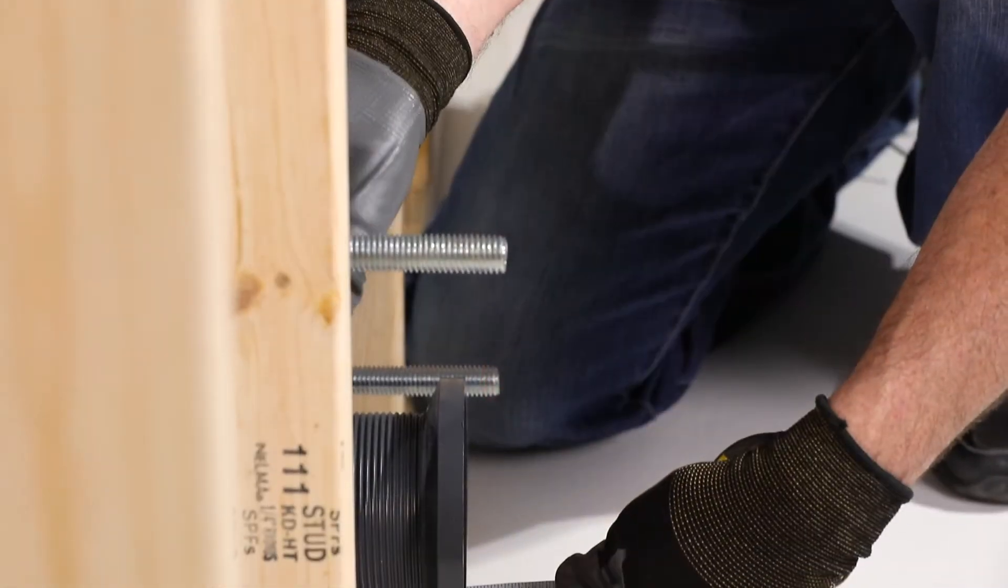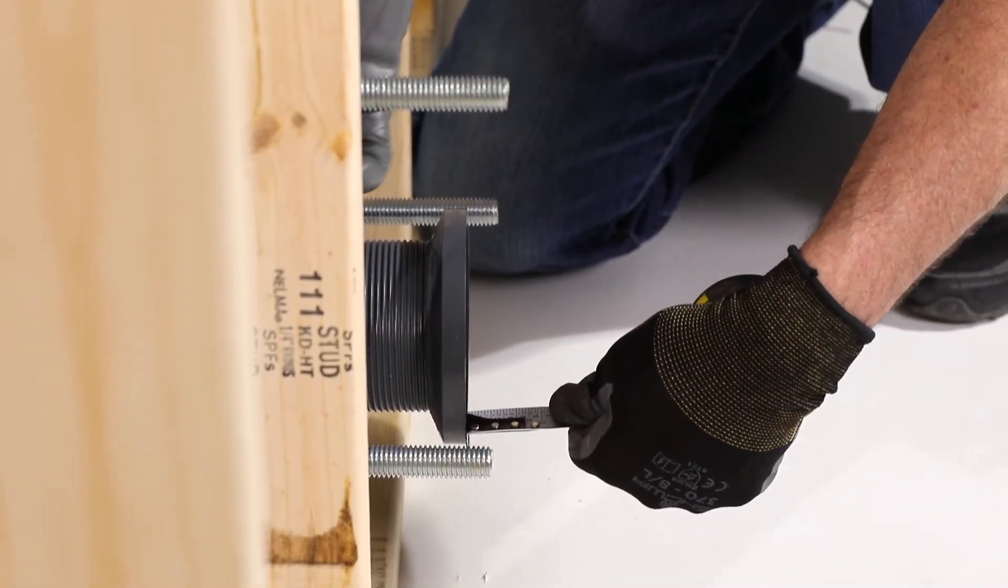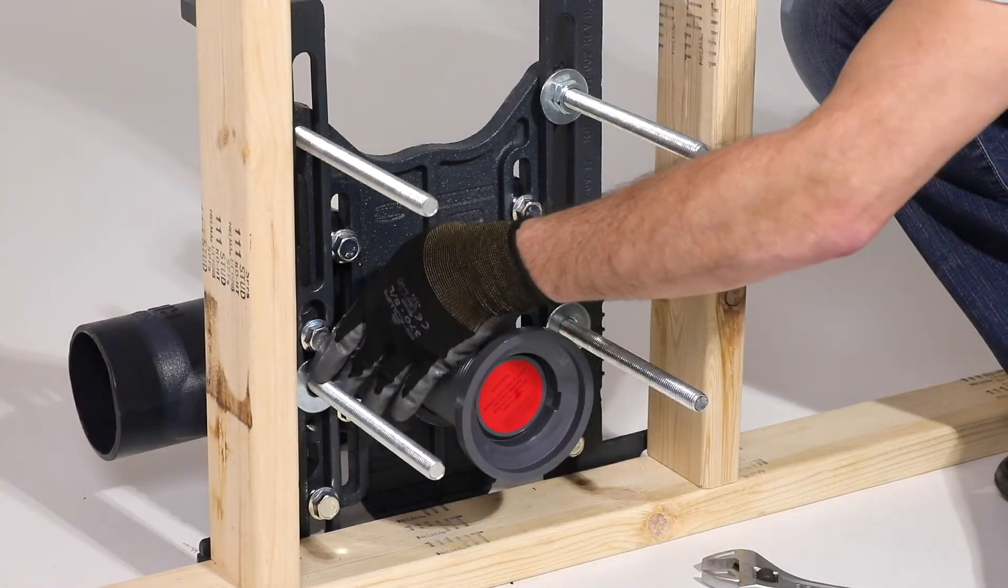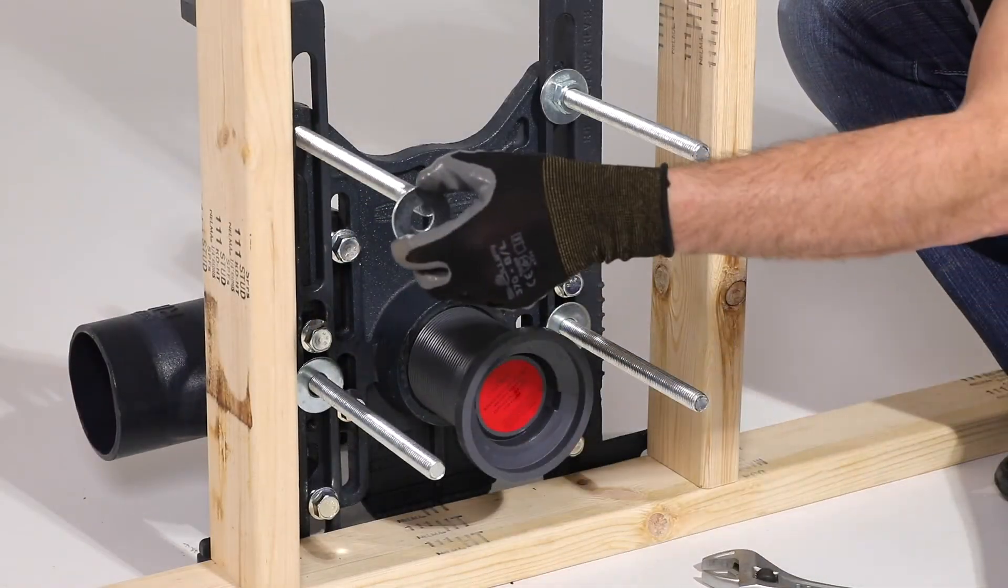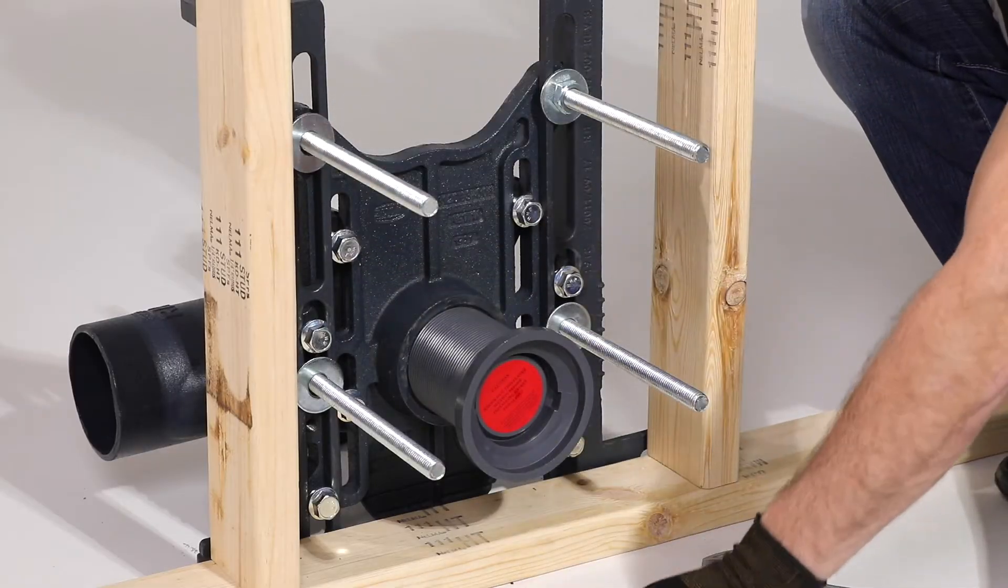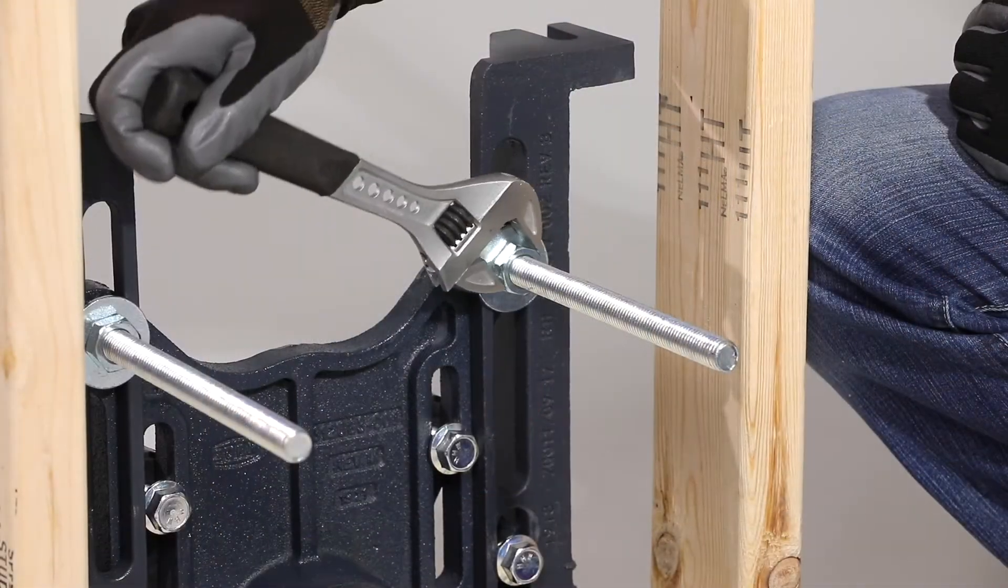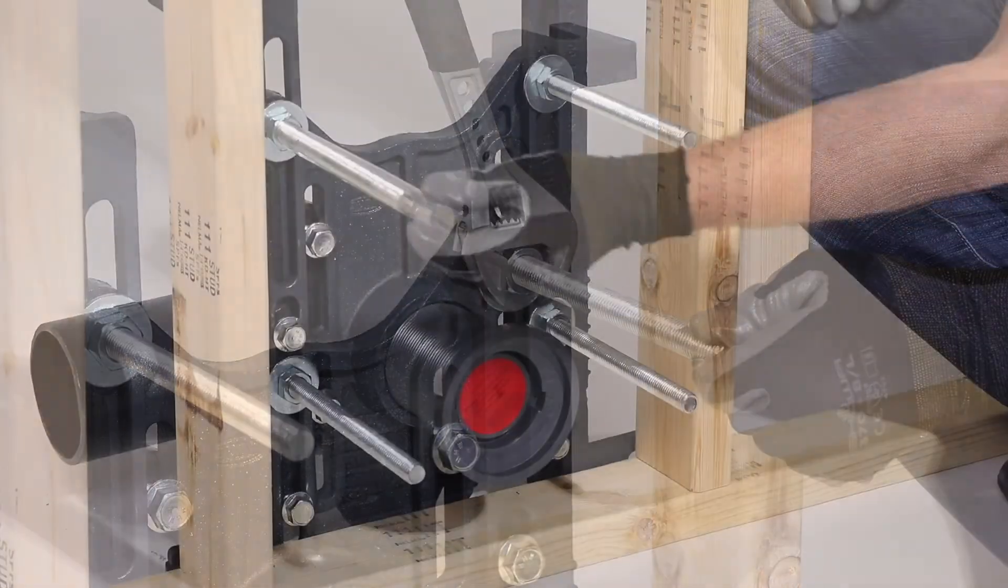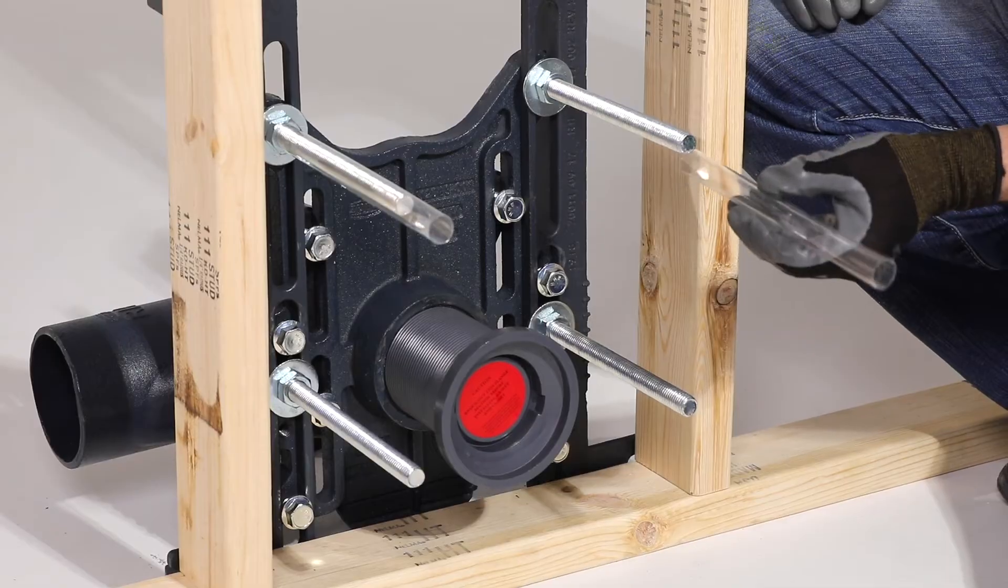Once again, take care to prevent leakage. If the threaded rods are too long, they will bottom out in the finishing cap nut. Tighten the jam nuts using a box wrench. Slide the protectors onto each threaded rod.